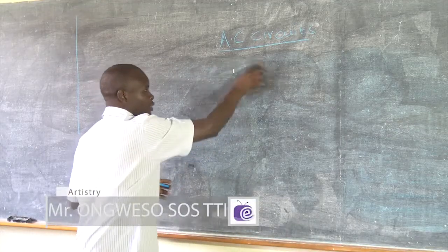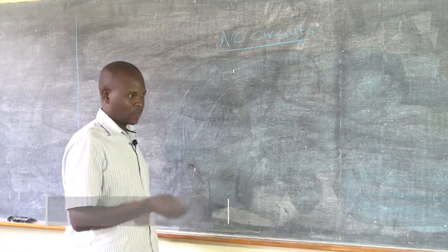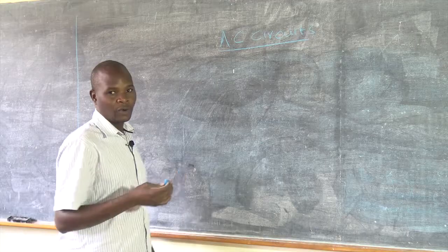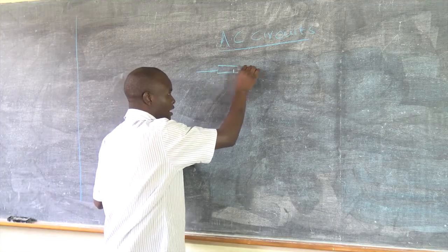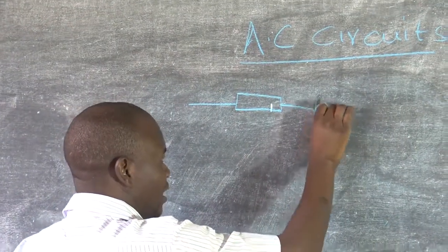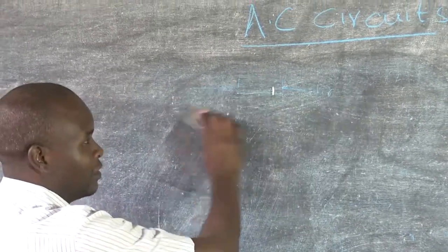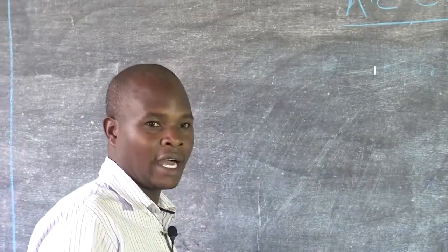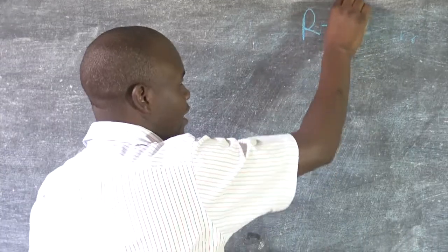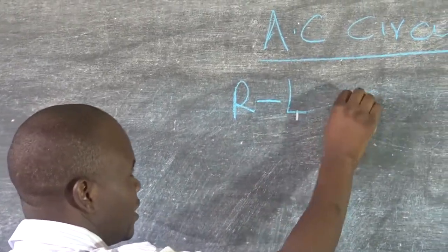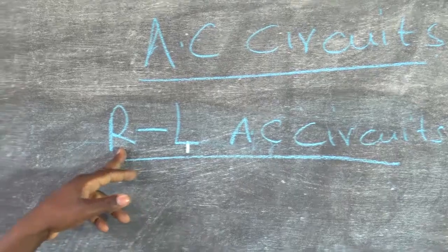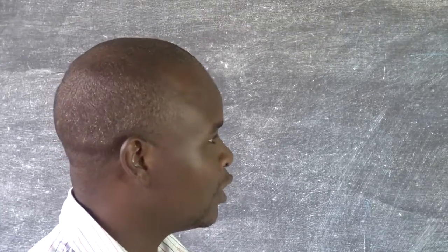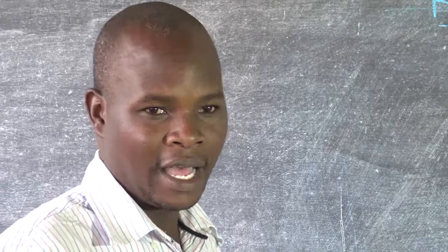Now let us go back to today's topic. Today we want to analyze how you can construct an AC circuit. An AC circuit should consist of a resistor and either an inductor or a capacitor. So let us start with an RL AC circuit. R means resistance, L means inductance — so an RL circuit means a circuit comprising of a resistor and an inductor.